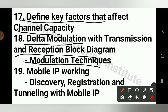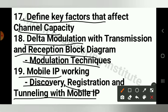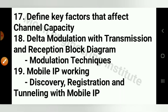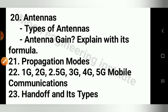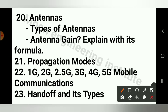Question number 19 is Mobile IP Working — which includes Discovery, Registration and Tunneling with Mobile IP. Question number 20 is Antenna and Types of Antenna — how Antenna Gain works, explained with its Formula.